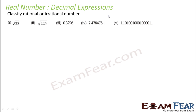Next: classify each number as rational or irrational. A rational number is terminating or non-terminating and repeating. An irrational number is non-terminating and non-repeating.